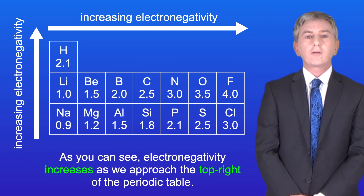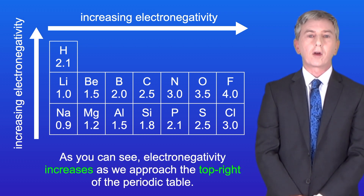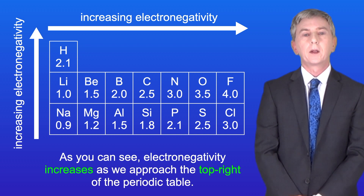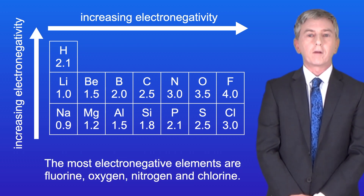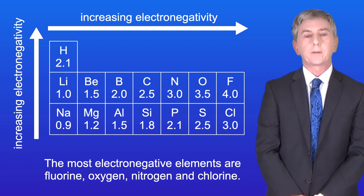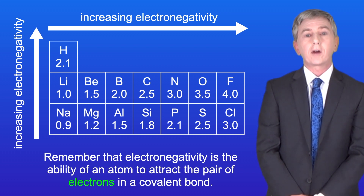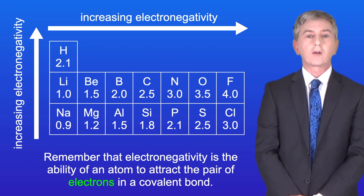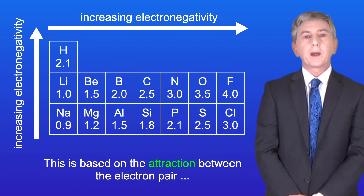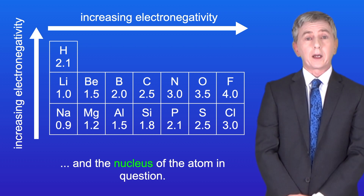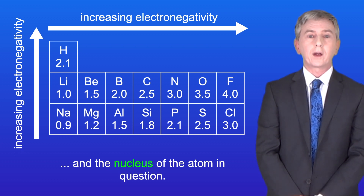As you can see, electronegativity increases as we approach the top right of the periodic table. The most electronegative elements are fluorine, oxygen, nitrogen, and chlorine. Remember that electronegativity is the ability of an atom to attract the pair of electrons in a covalent bond, and this is based on the attraction between the electron pair and the nucleus of the atom in question.